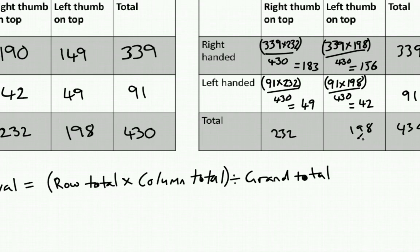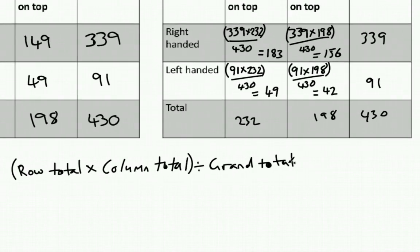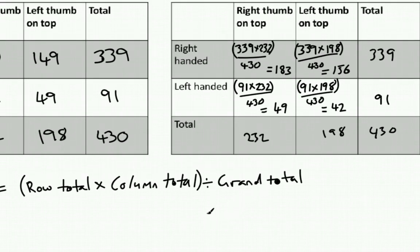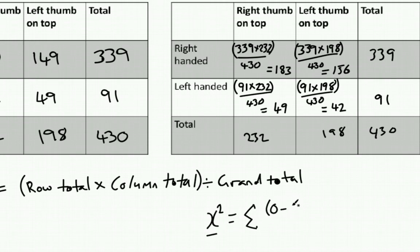Now that we've calculated our expected values, we can apply our chi-squared formula. The chi-squared formula: the symbol x-squared is our symbol for chi-squared, and it's equal to the sum — this is the mathematical symbol for the sum — of our observed value minus our expected value, squared, divided by our expected value. Our chi-squared value is equal to the sum of all our observed values minus expected values, squared, over expected.